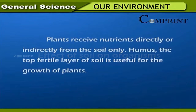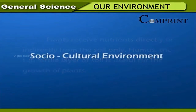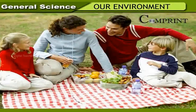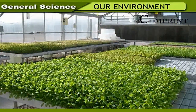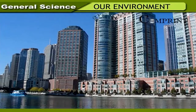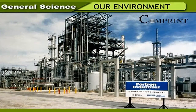Effect of soil on organisms: Plants receive nutrients directly or indirectly from the soil only; humus, the top fertile layer, is useful for plant growth. Socio-cultural environment: Families, human societies, marriage systems, religions, culture, law, festivals, prayer halls, agriculture centers, business centers, training centers, entertainment centers are one part of the socio-cultural environment. Buildings, bridges, roads, and industries constructed for the luxurious life of human beings are the other part. Man has cut down forests, built skyscrapers, and created concrete jungles.